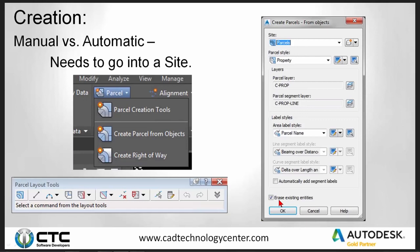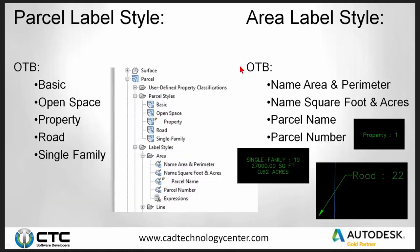That dialog asks: what site, what parcel style, what label style? Out of the box, Civil 3D Imperial has a handful of parcel label styles — basic, open space, property, road, and single family — which control the color of your perimeter line. The area label style out of the box has name, area, perimeter, name square foot acreage, parcel name, and parcel number. Examples include the name style, the number style, and the road style.